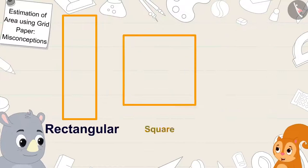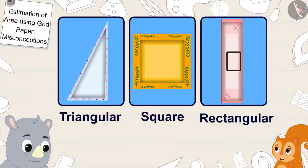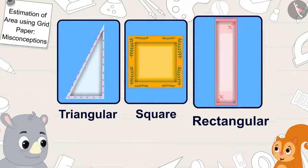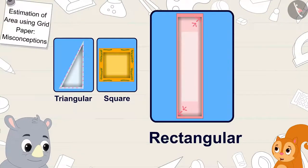Because rectangle is bigger than square and triangle, the rectangular plate is bigger than both these plates. Chanda said to Gaggoo.